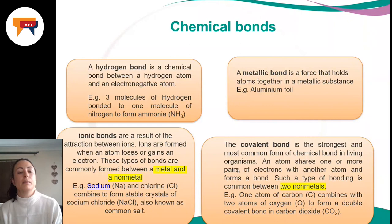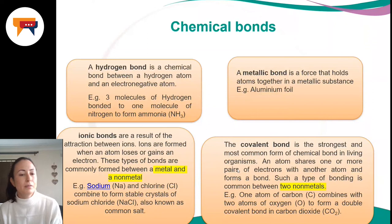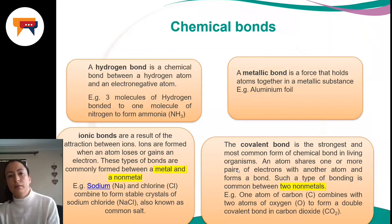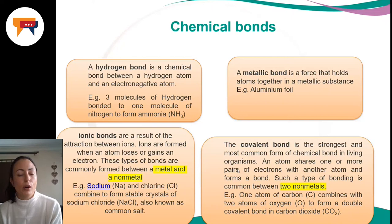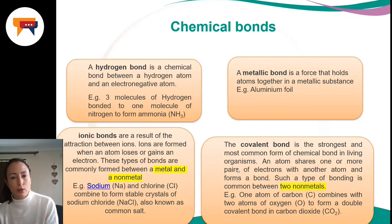The ionic bond, highlighted in yellow, is a bond between a metal and a nonmetal. Ionic bonds result from the attraction between ions. Ions are formed when an atom loses or gains an electron — those negatively charged ones on the outer shell. Gaining or losing an electron determines whether we become positive or negative ions. For example, sodium and chlorine form sodium chloride through an ionic bond — we also call that table salt.